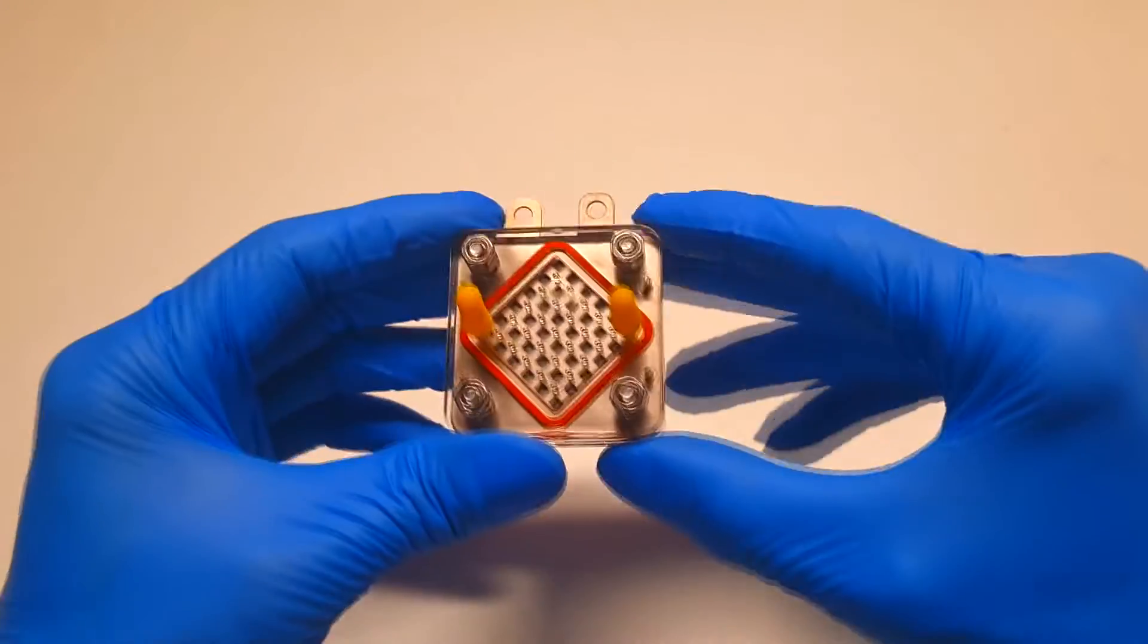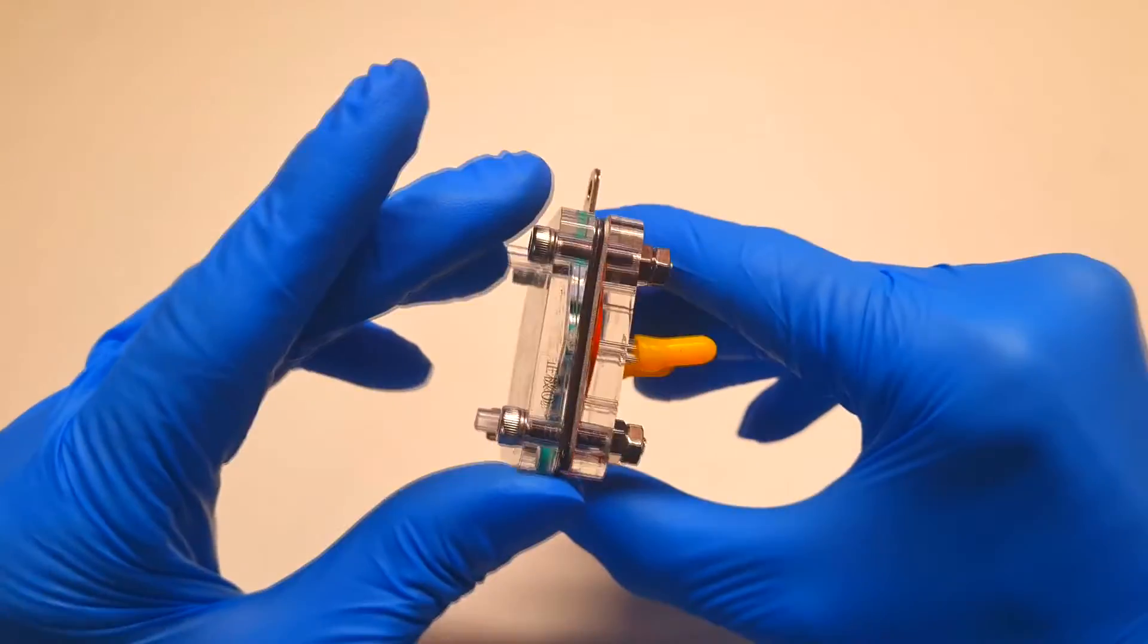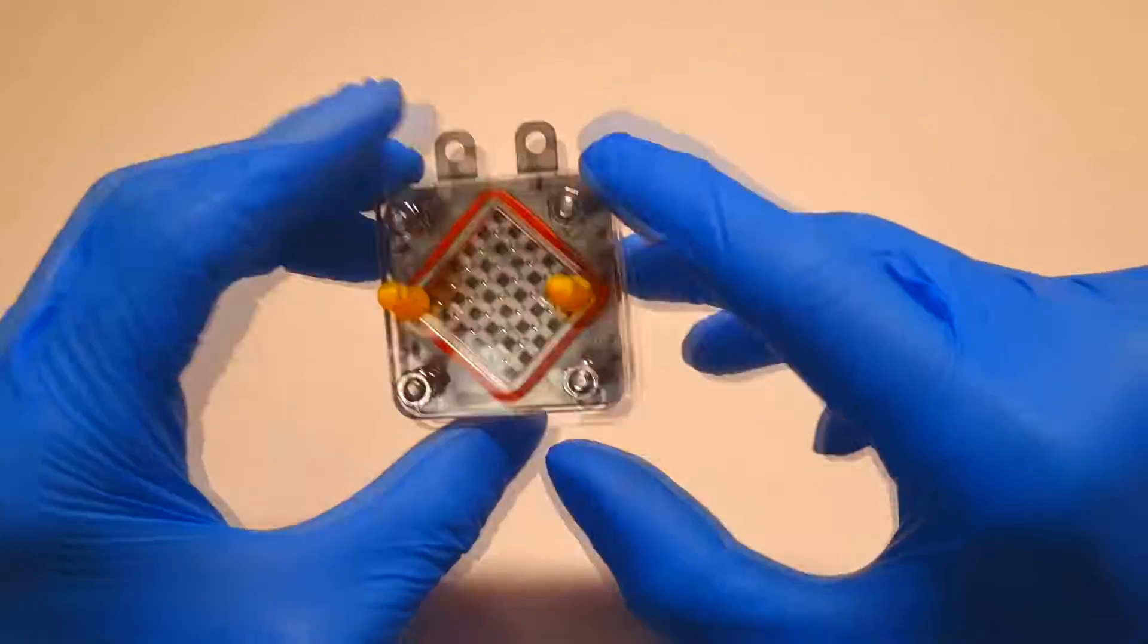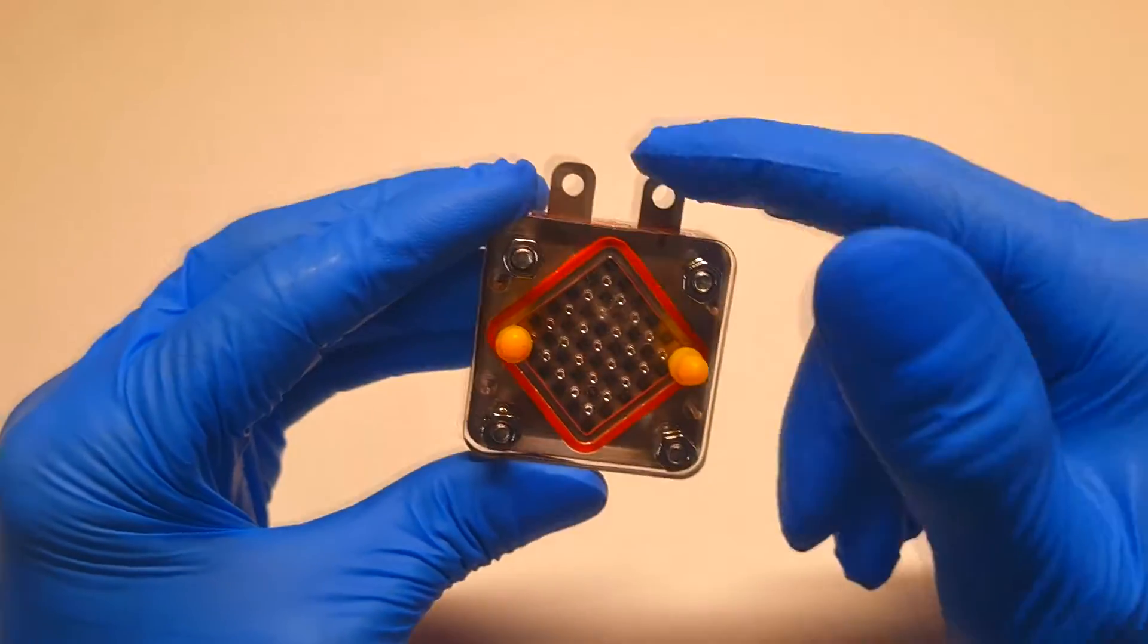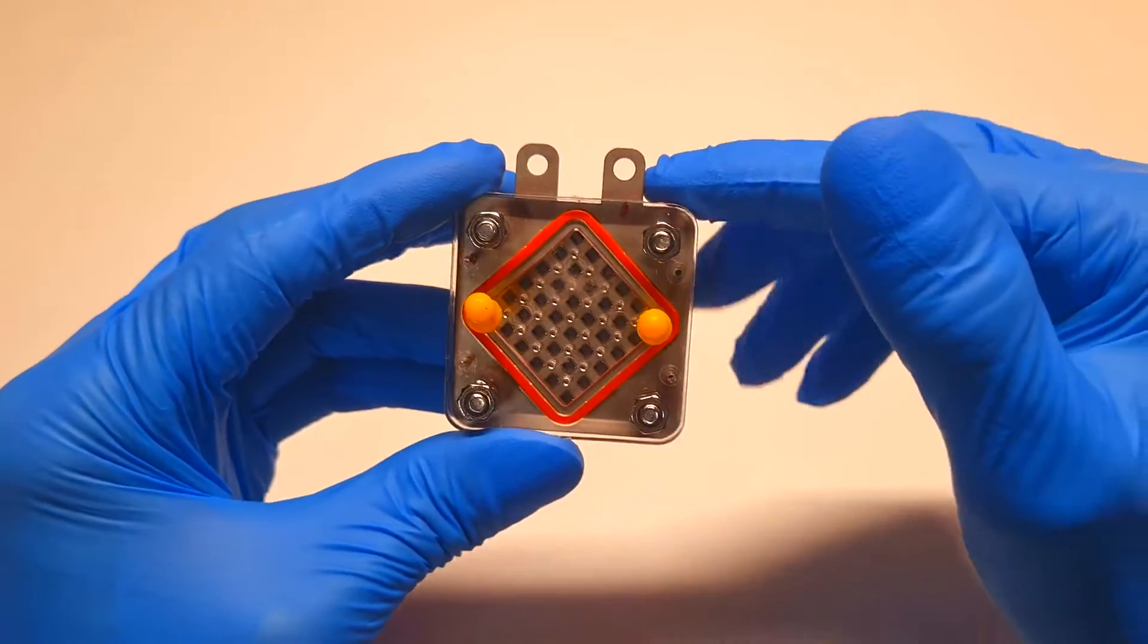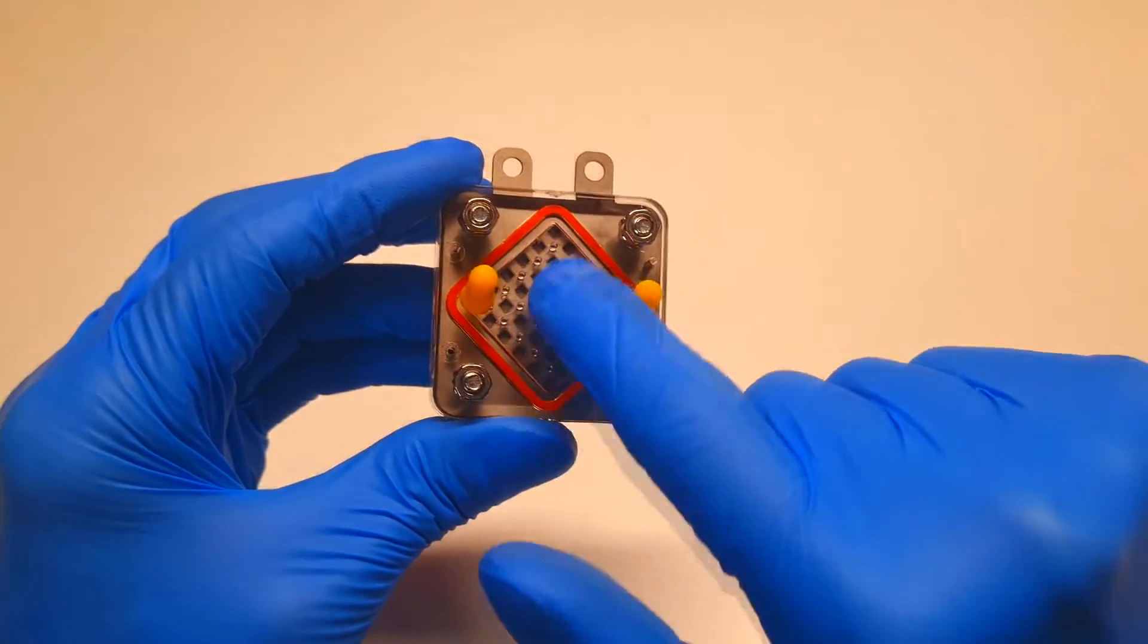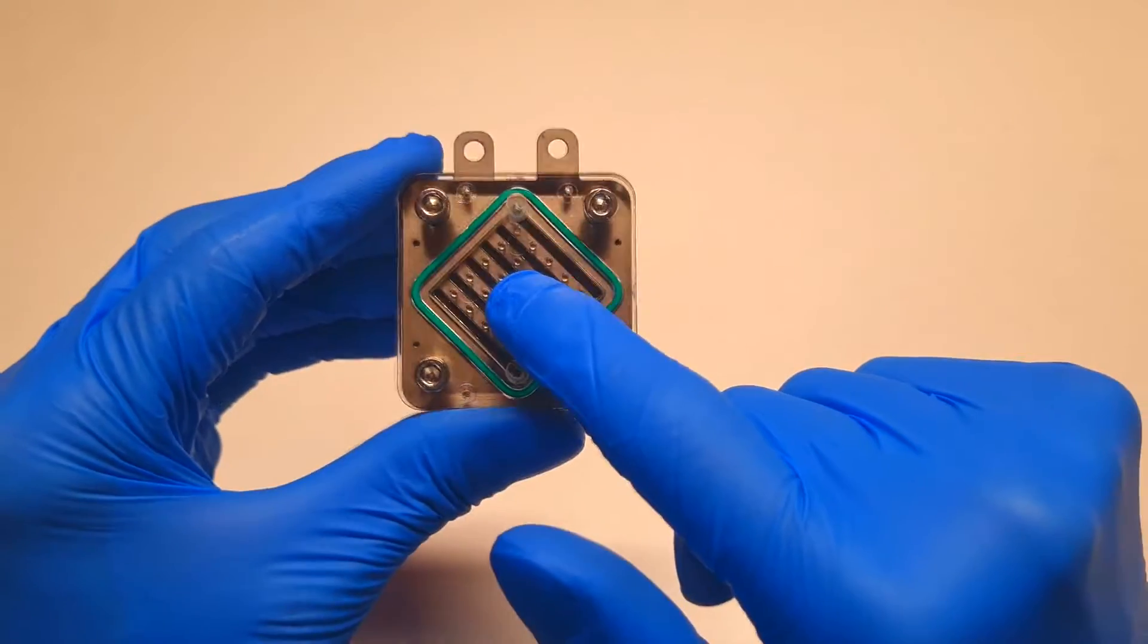So here I have one hydrogen fuel cell. You can see that the end plates which are here and here are made from acrylic plastic. Here on the top I have the contacts where you can connect a load. This side is the hydrogen side and this side is the oxygen side.